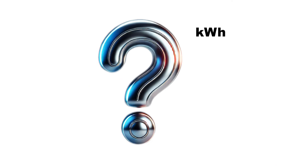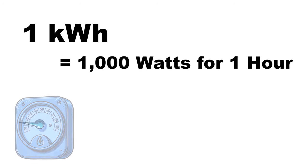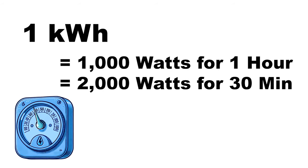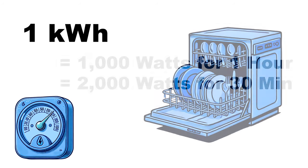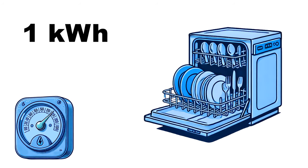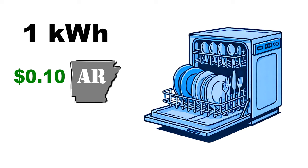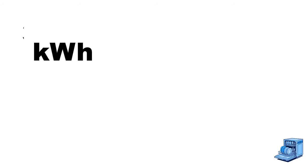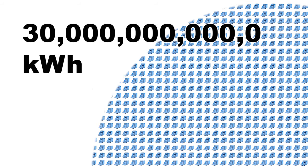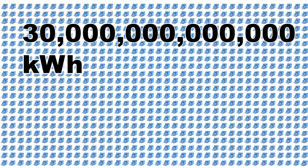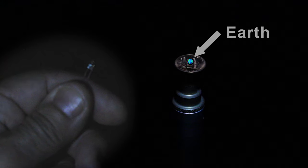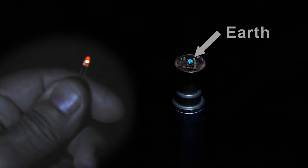But what's a kilowatt hour? One kilowatt hour is 1,000 watts of power for one hour, or 2,000 watts for 30 minutes. Running the dishwasher requires about 1 kilowatt hour. By the way, the cost for a kilowatt hour in January of 2024 was 10 cents in Arkansas and 32 cents in Hawaii. So we humans can now harness 30 trillion dishwasher loads per hour. Let's represent that amount of power by this one LED.